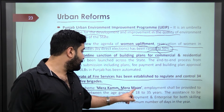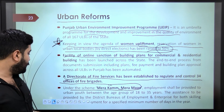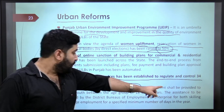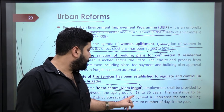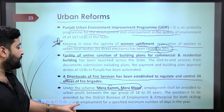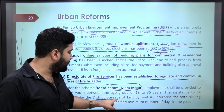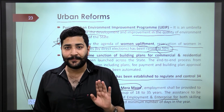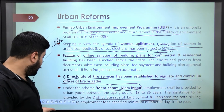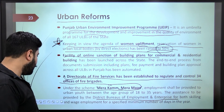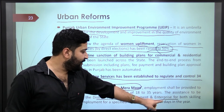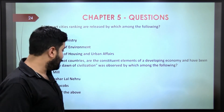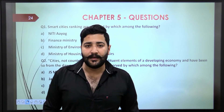Under the scheme 'Mera Kaam Mera Amaan,' employment shall be provided to urban youth between age group 18 to 35 years. Implementation is done through District Bureaus of Employment and Enterprise. The scheme provides both skilling and wage employment for a specified minimum number of days in the year.